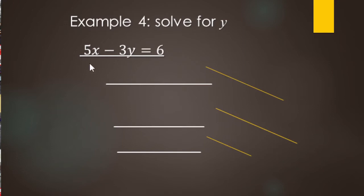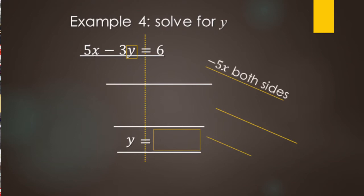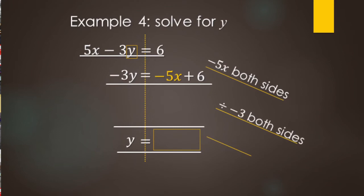Another example of solving for Y. We find Y in the equation — there it is. At the bottom of our work we'll want Y equals the expression. When solving literal equations, answers are expressions, not numbers. We want to go from 5X minus 3Y to just Y, so we subtract 5X from both sides. 5X minus 5X leaves no more 5Xs — just negative 3Y — and 6 minus 5X is written as negative 5X plus 6. Variable terms go first. Then we divide both sides by negative 3: negative 3Y divided by negative 3 gives Y, and we have negative 5X plus 6 all divided by negative 3.